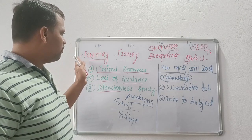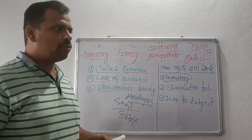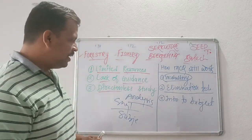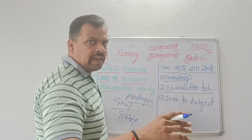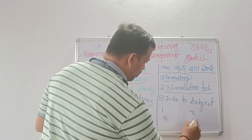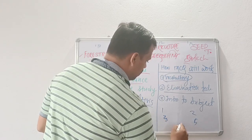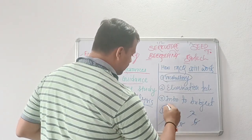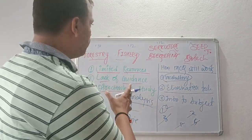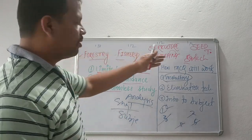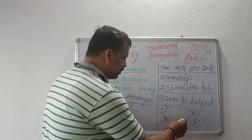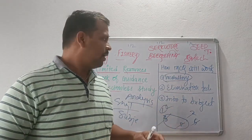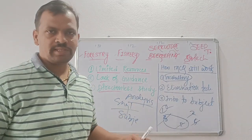In 2 to 4 months you cannot become a master in these subjects, but at least you can solve multiple choice questions using the elimination technique — choosing wrong options and eliminating them. Suppose there are 4 or 5 options; the elimination technique helps in rejecting incorrect options and arriving at the correct answer.